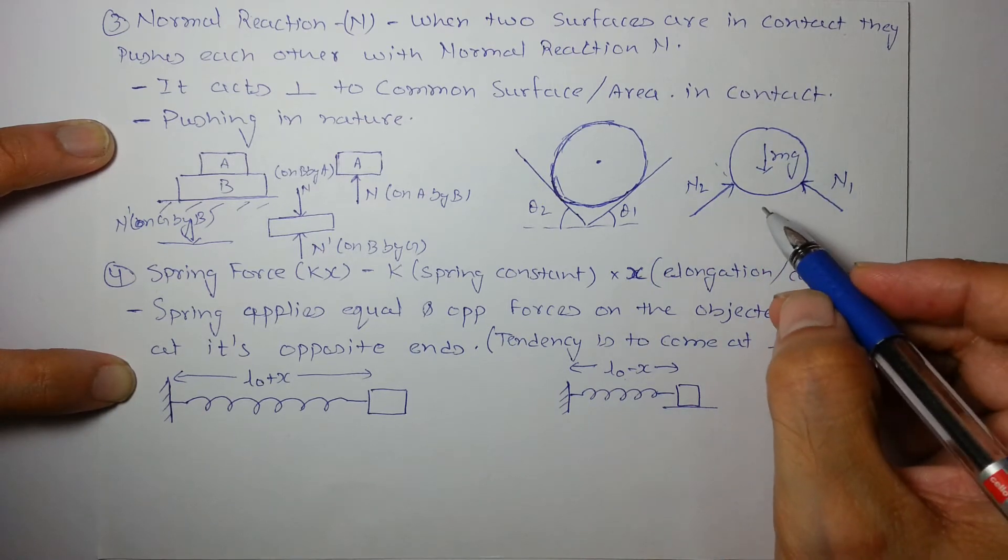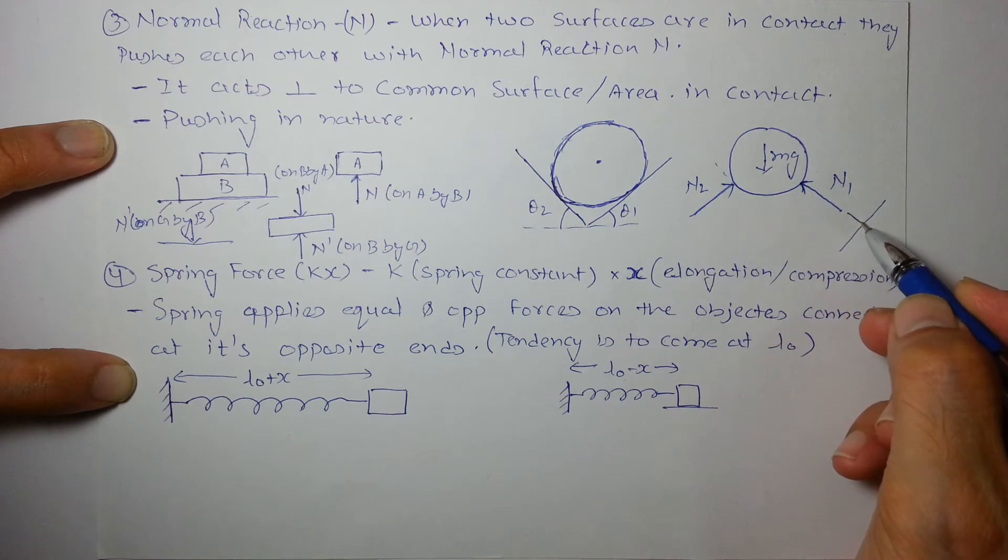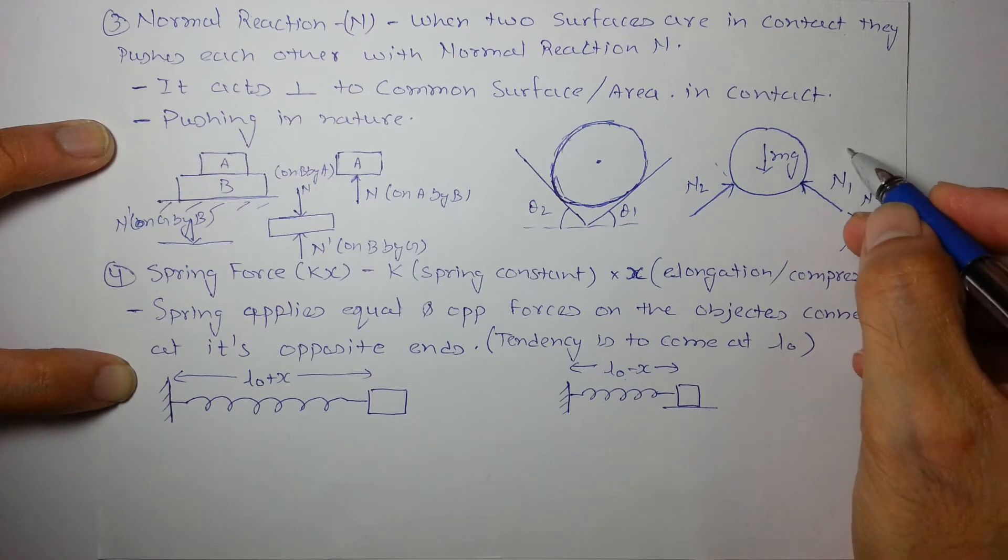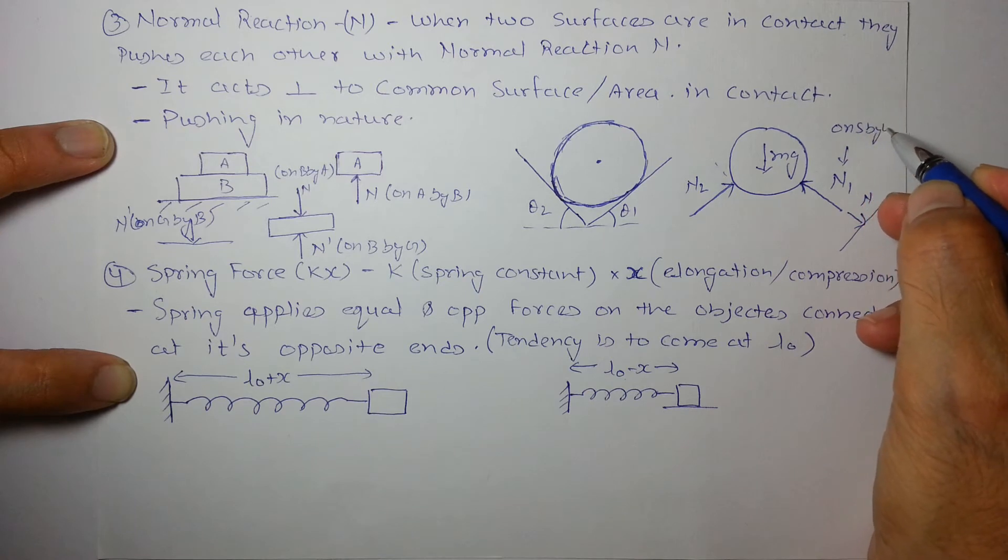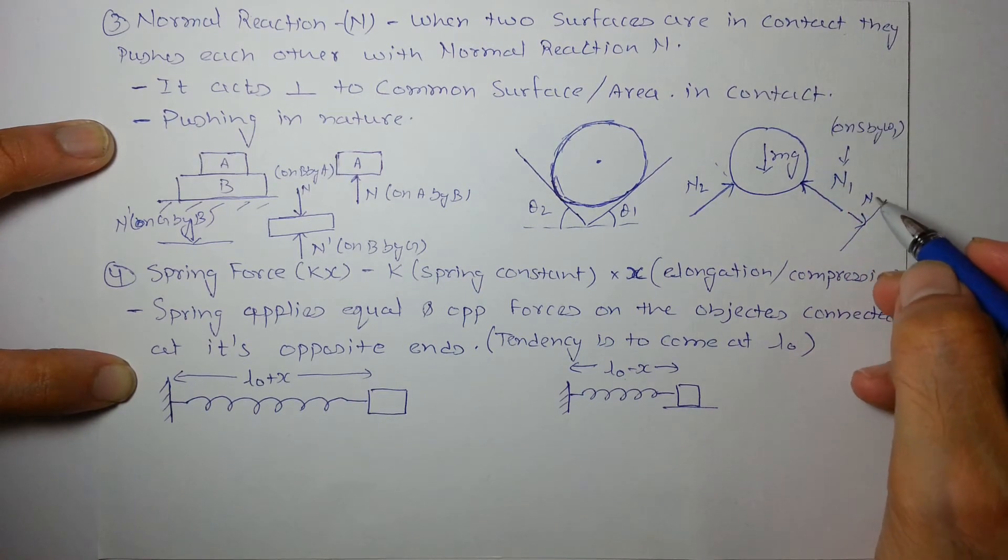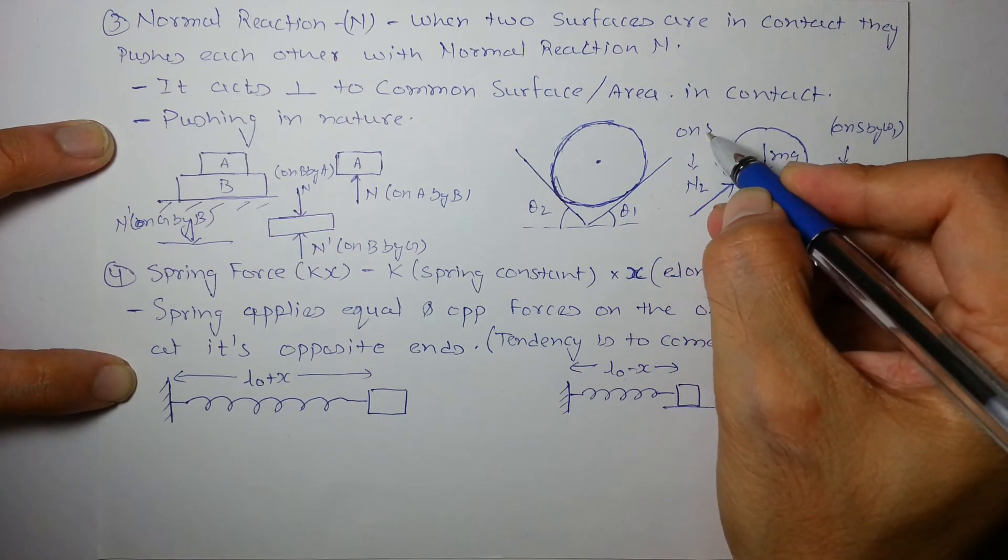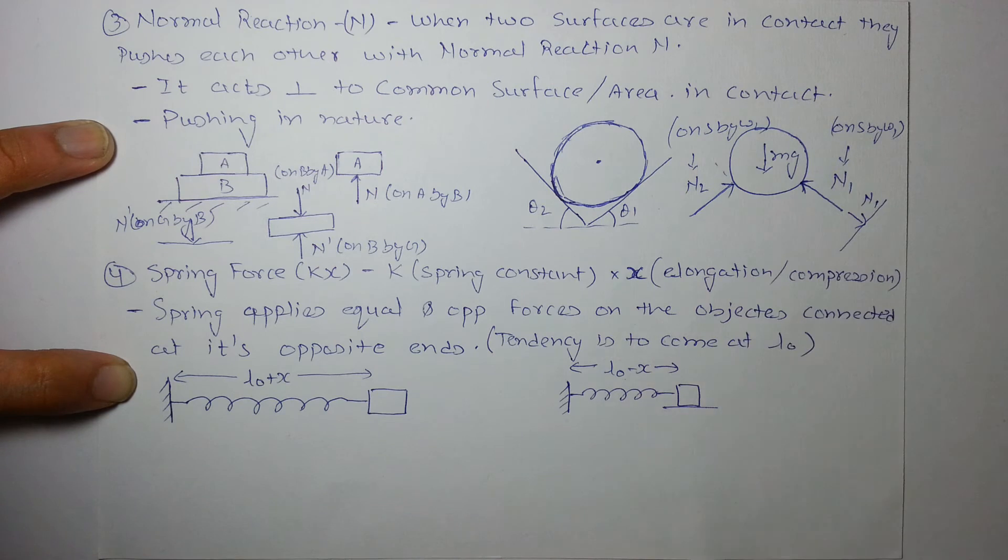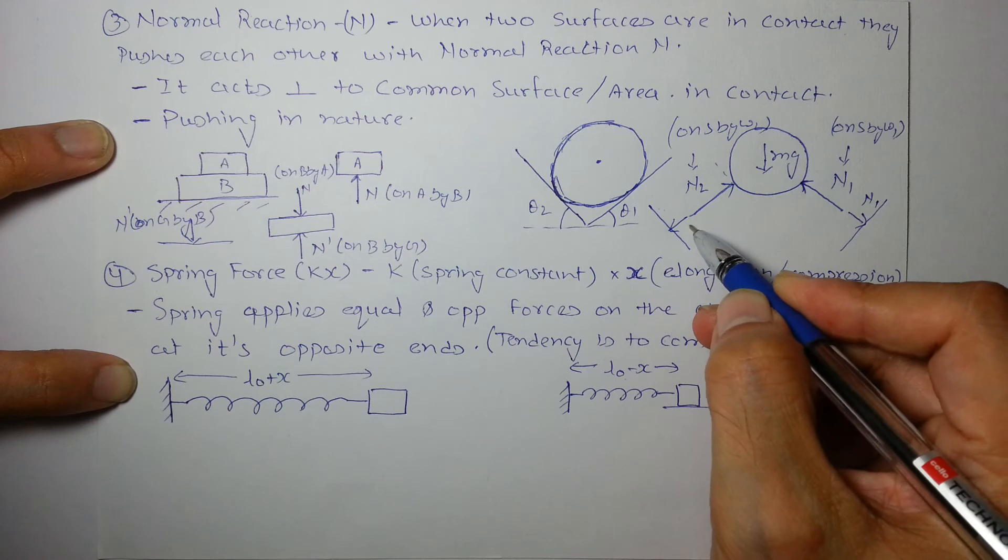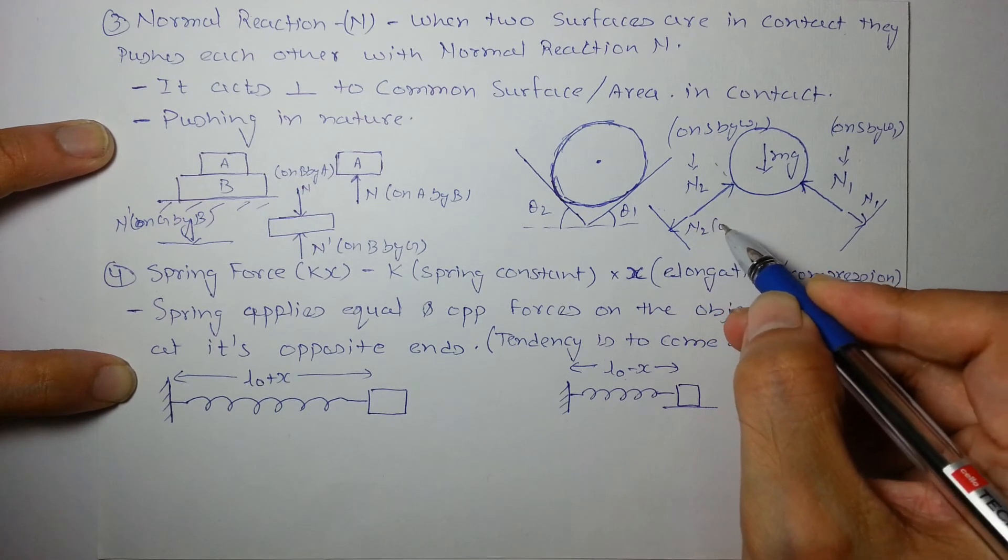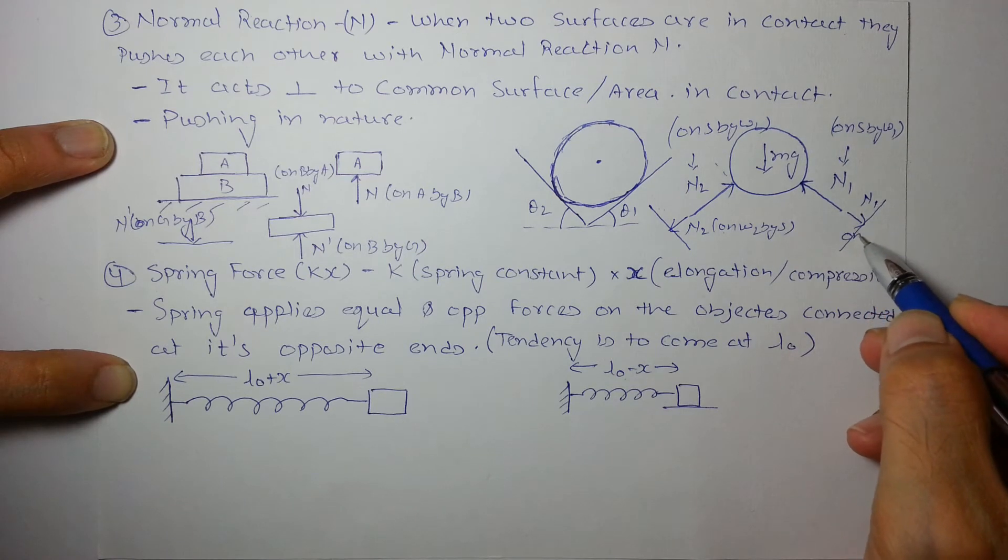So we can also say that these walls will experience equal and opposite normal reactions. This normal reaction is on sphere by wall one, and this will be on sphere by wall two. We can also see that there will be equal normal reactions on wall two by sphere and this is on wall one by sphere. So this is how normal reaction acts.